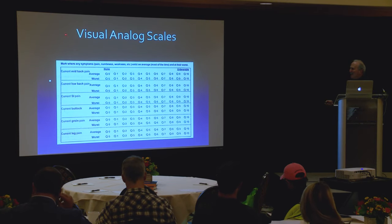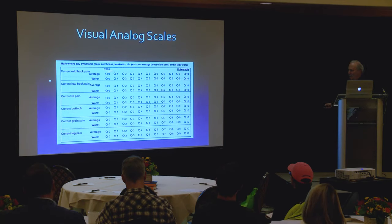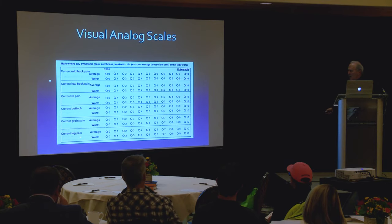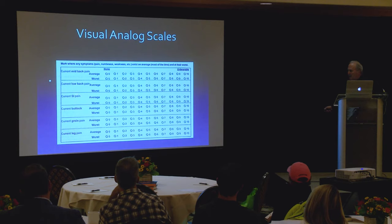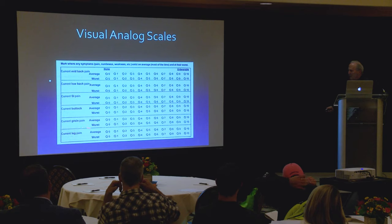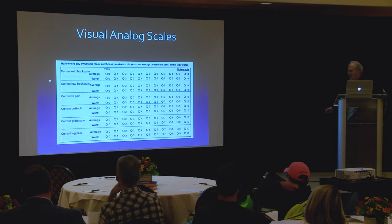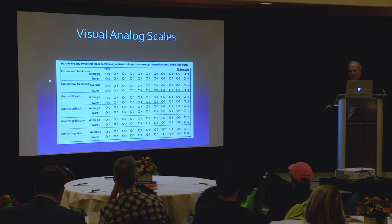Visual analog scales: you're trying to first get the intensity of the pain. Everybody should have this on their chart. You try and break it down — mid-back pain, low-back pain, SI, buttocks, groin, and leg — and you split it up so you make patients start to think. A lot of people don't know the difference between SI and buttocks pain. Groin pain is pretty easy. Leg pain doesn't tell you anterior, posterior, or lateral to the foot, but it tells you the intensity of the pain.